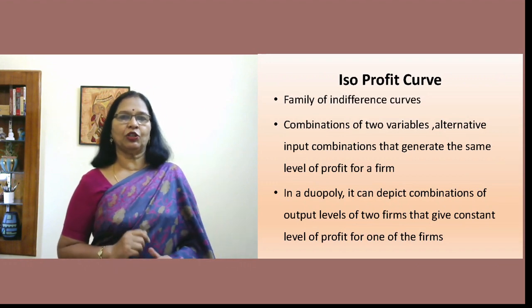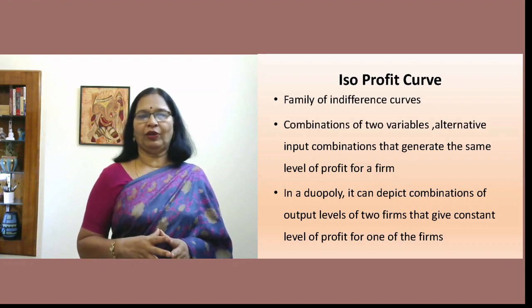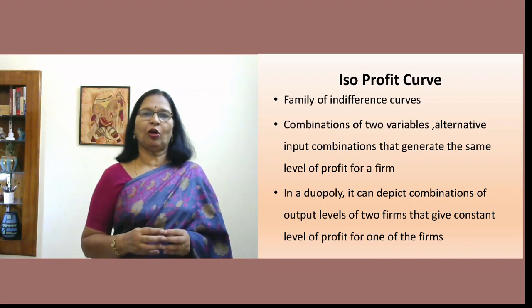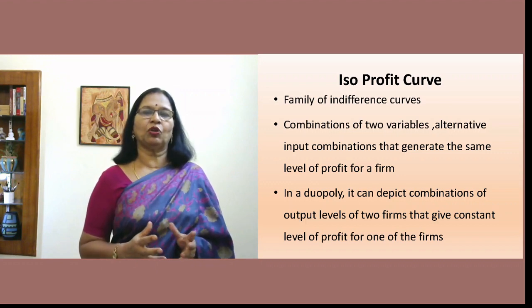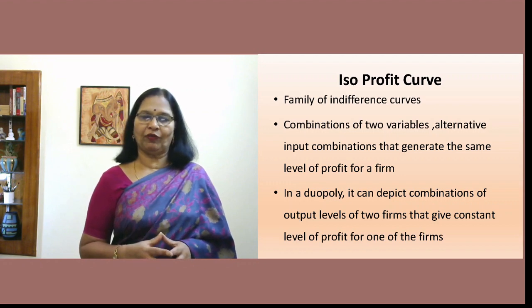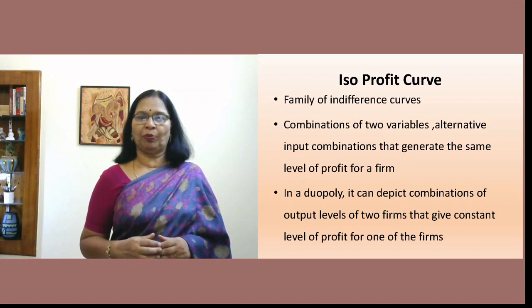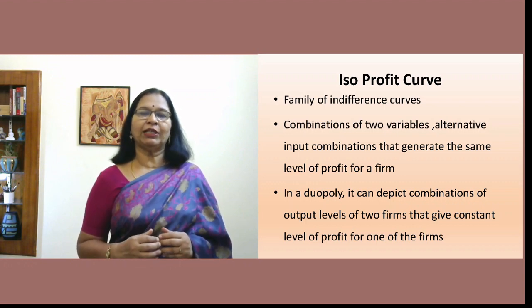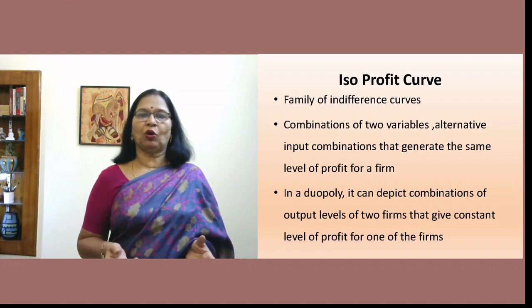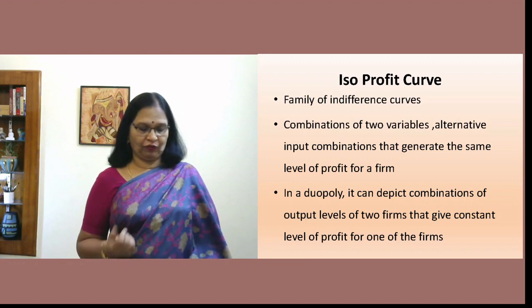An isoprofit curve belongs to the family of indifference curves and shows the combination of two inputs or two variables that gives the firm the same level of profit. The same idea can be used to explain duopoly: it depicts combinations of output levels of two firms on two axes, giving a constant level of profit to one of the firms.